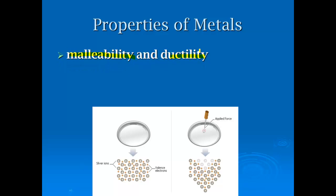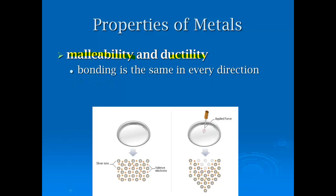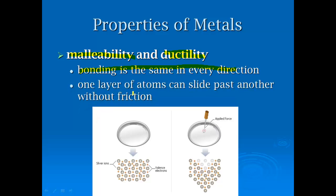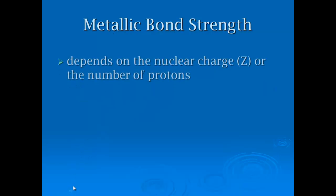Metals also have malleability — the ability to be hammered into a thin sheet — and ductility — the ability to be pulled into a thin wire. This is because the bonding is the same in every direction, and one layer of atoms can easily slide past another without friction. By contrast, ionic compounds — think of them like Lincoln logs — are usually very brittle and will easily fall apart.